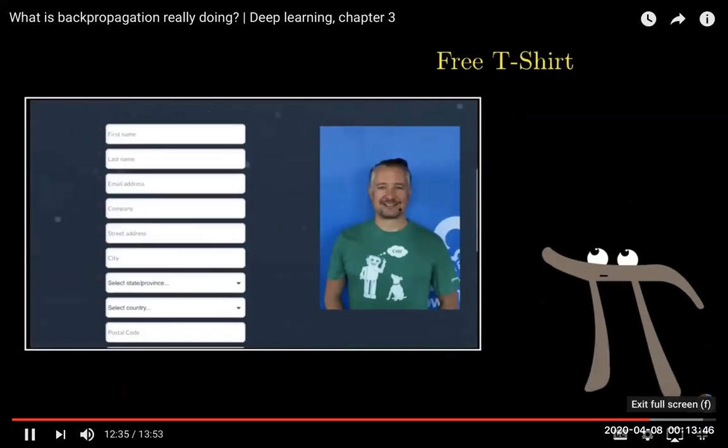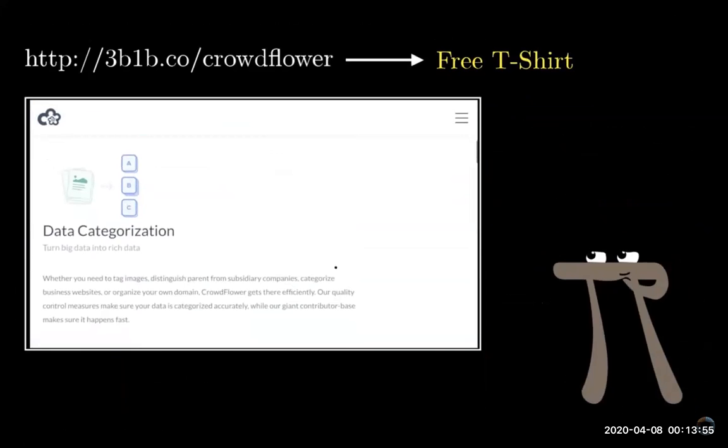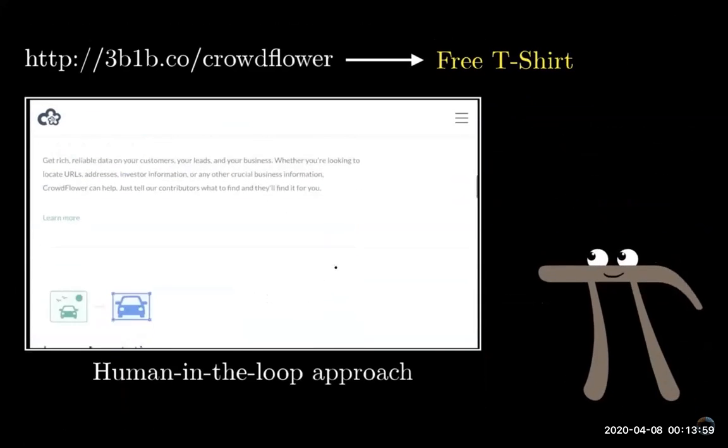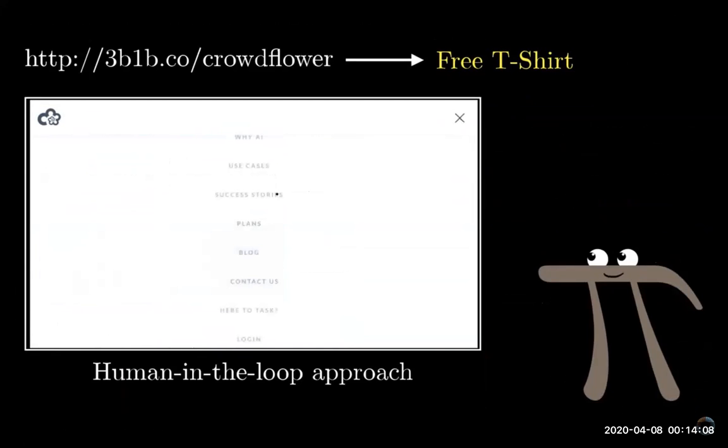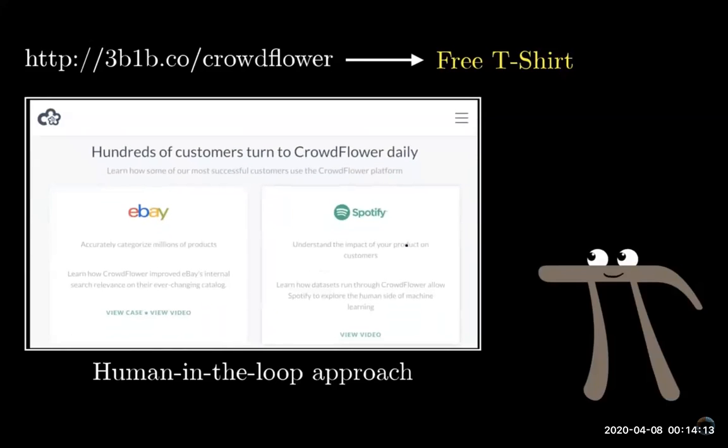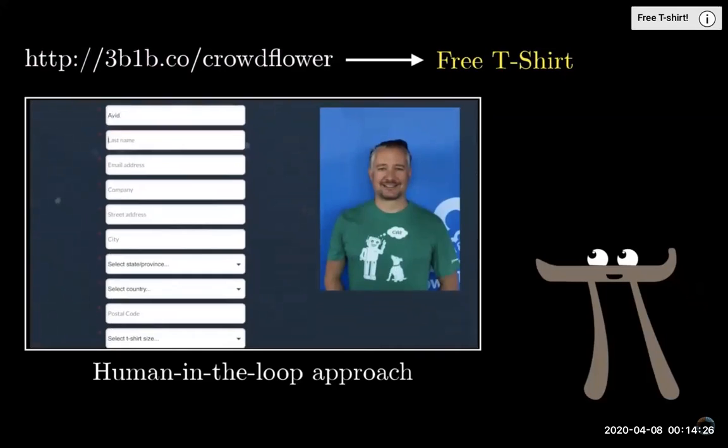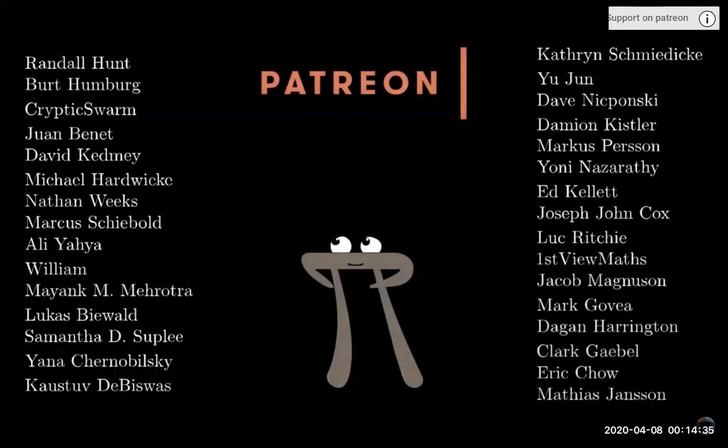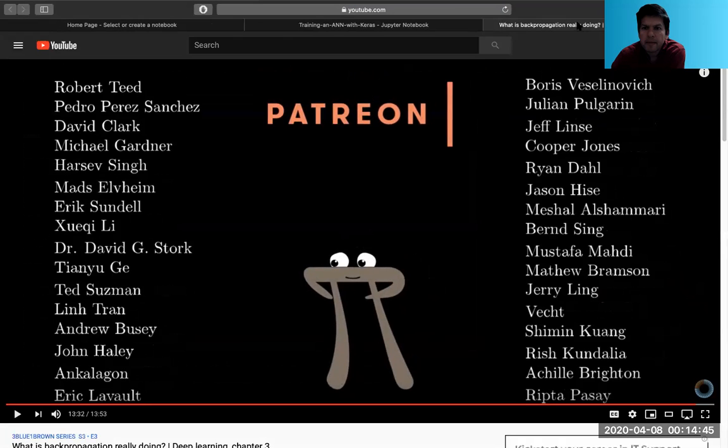This actually transitions really nicely to today's extremely relevant sponsor, Crowdflower, which is a software platform where data scientists and machine learning teams can create training data. They allow you to upload text or audio or image data and have it annotated by real people. This is the human in the loop approach, leveraging human intelligence to train machine intelligence. If you go to 3b1b.co/crowdflower or follow the link on screen, you can create a free account, and they'll send you a free shirt once you've done the job. Thanks to Crowdflower for supporting this video and thank you to everyone on Patreon.